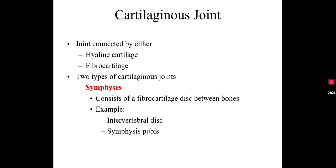So those are the four types of fibrous joints. Now I'd like to finish this lesson by taking a look at cartilaginous joints. Unlike fibrous joints, these joints are made up of cartilage. There are two types of cartilage: hyaline cartilage and fibrocartilage. There are only two types of cartilaginous joints. The first one is known as a symphysis — this is a fibrocartilage disc. Examples include the intervertebral disc, which is the disc between the body of the vertebrae, and the symphysis pubis, which is a disc between the two pubic bones. Any fibrocartilage disc in the body is categorized as a symphysis.